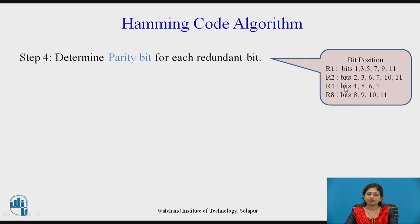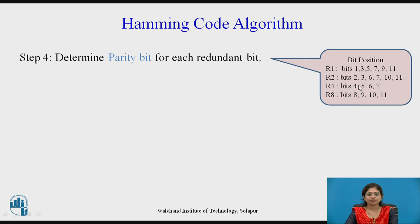For r4, the bit positions are 4, 5, 6, 7, and for r8 they are 8, 9, 10, 11, and so on. The pattern is: for r1, take one bit, skip one, alternating. For r2, take two bits starting at position 2 and 3, skip the next two, take the next two. For r4, take four bits starting at position 4, skip four, take four. Similarly for r8, take eight bits, skip eight, and so on.